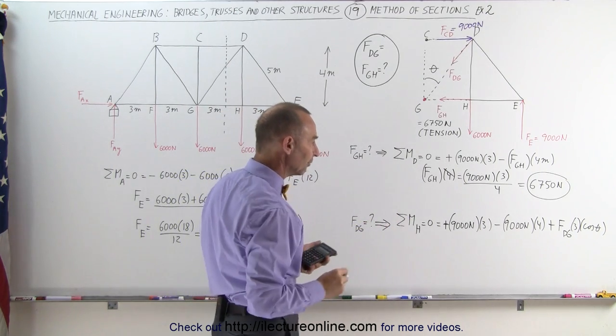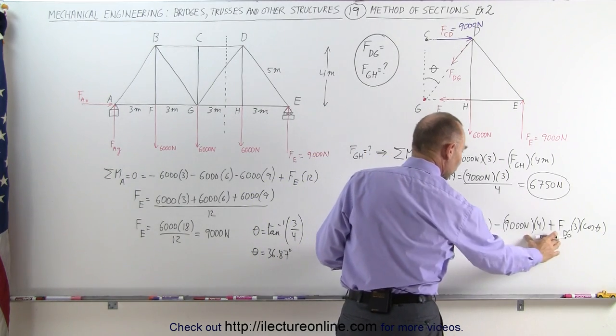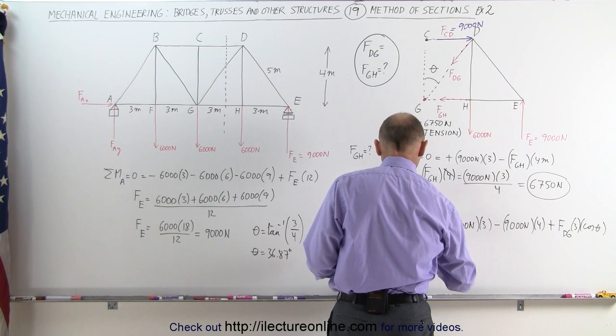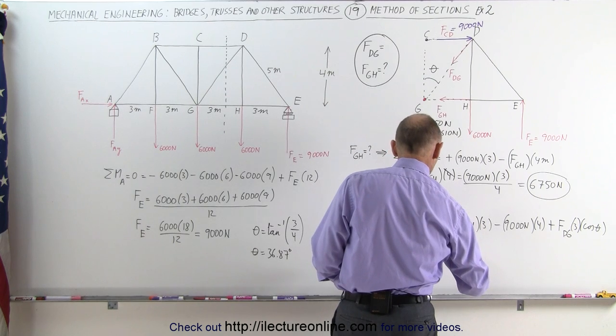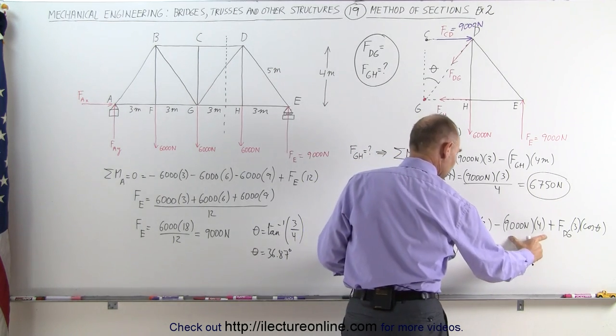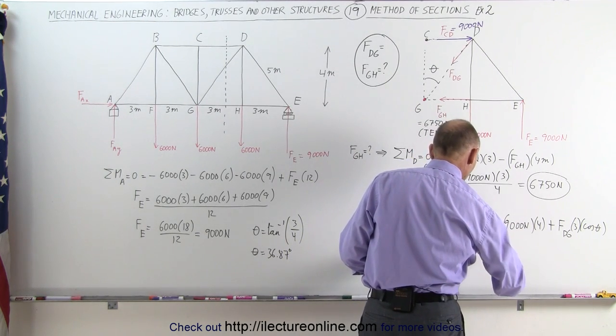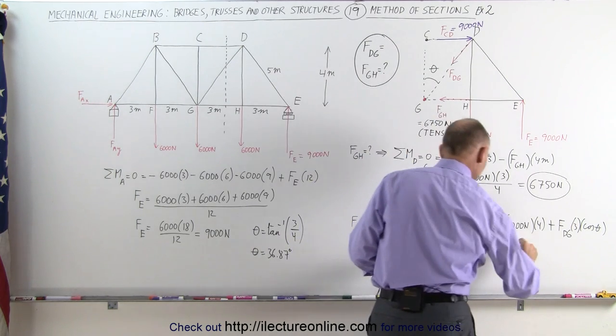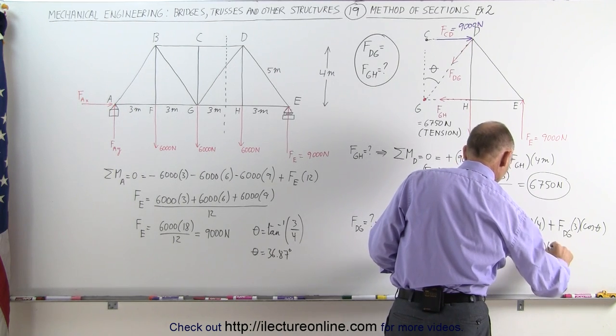Once we have the angle we can now solve that for FDG. Moving both to the other side, turning the equation around, I have FDG multiplied times 3, multiplied times the cosine of 36.87 degrees, equals positive 9,000 newtons times 4 meters, minus 9,000 newtons times 3 meters.